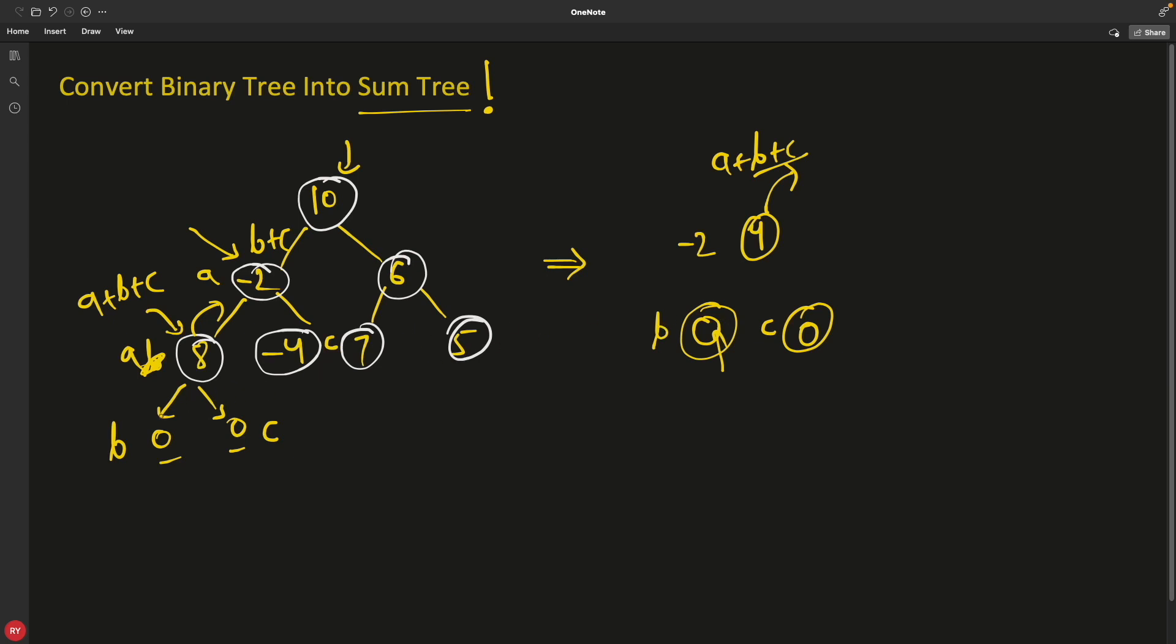You will store whatever you received from left hand, right hand side, inside this node or your current node. And you will send back the value with your new value, what you stored in this plus the old value. That's it.